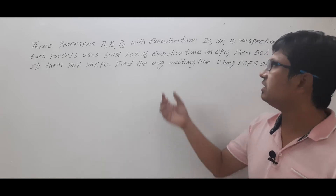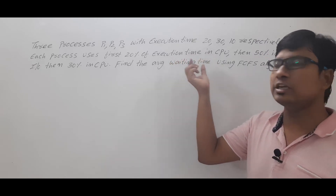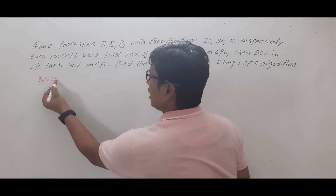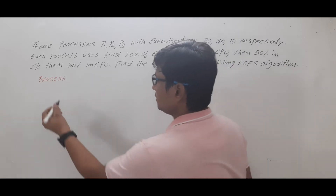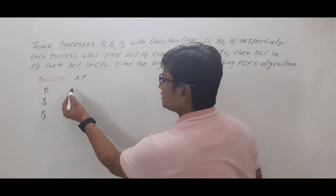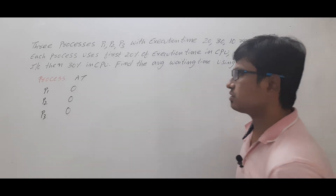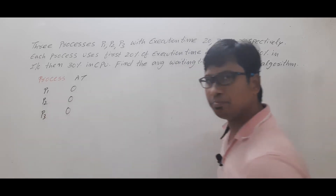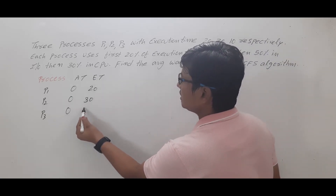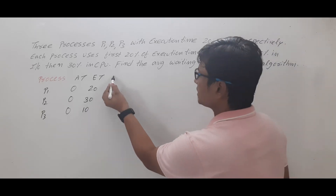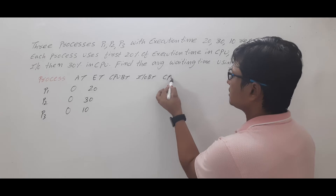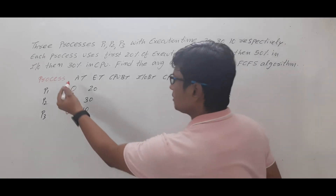If you look at the question carefully, each process will have a CPU burst time and also an IO burst time. They have three processes. Let me draw the table first — we will have processes P1, P2, P3. Their arrival time has not been mentioned; if they do not mention the arrival time, you can consider it as zero. The order of arrival is P1, then P2, then P3. Execution times are 20, 30, and 10 units. The columns are: CPU burst time, IO burst time, then CPU burst time again.